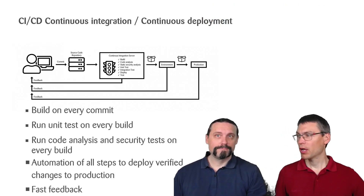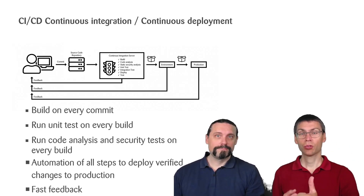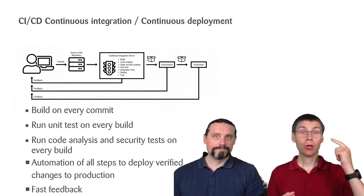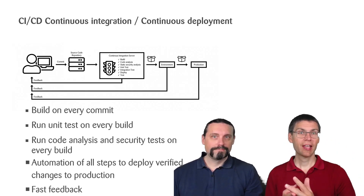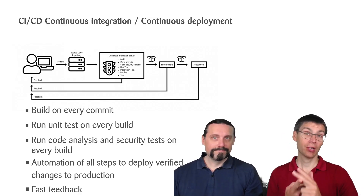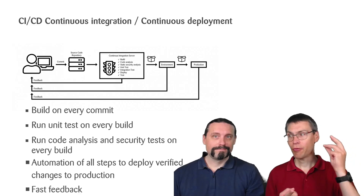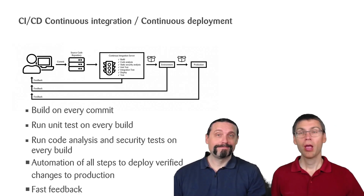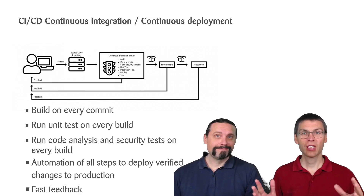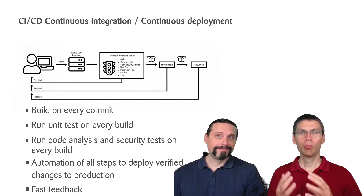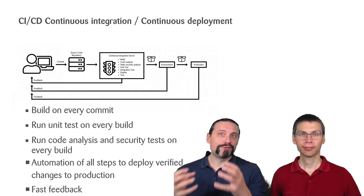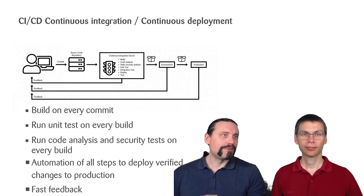Let's see whether I got that right. So we build the system on every commit. We run unit tests on every build. We also run code analysis and security tests on every build. In addition, we have automation of all the steps to deploy verified changes to production if need be. And on top of all of this, we have very fast feedback so developers can act accordingly. Yes, exactly. And this is what continuous integration and continuous deployment is all about.